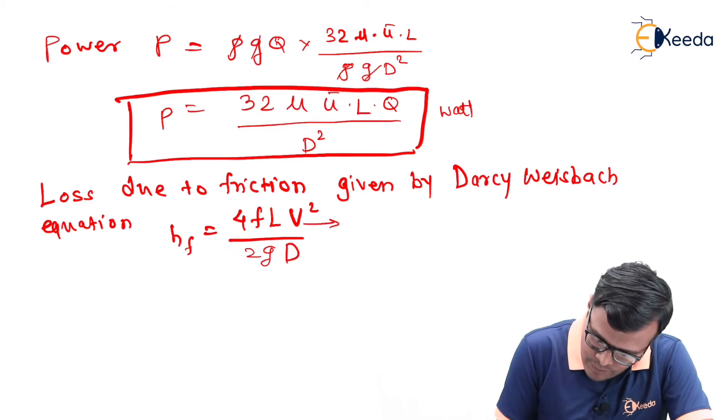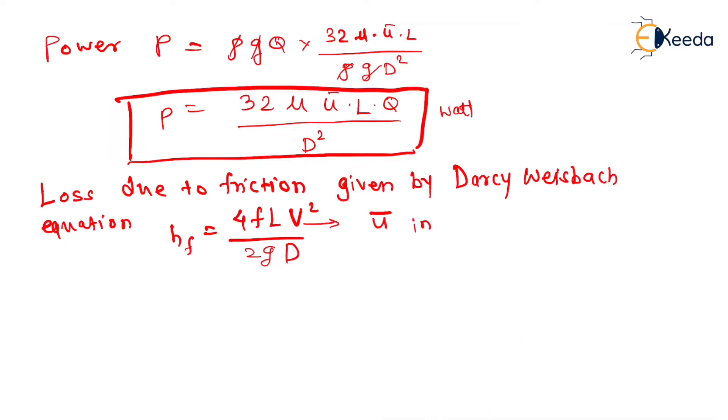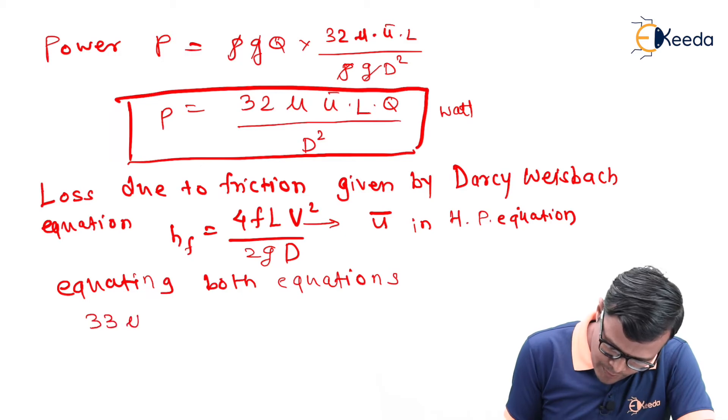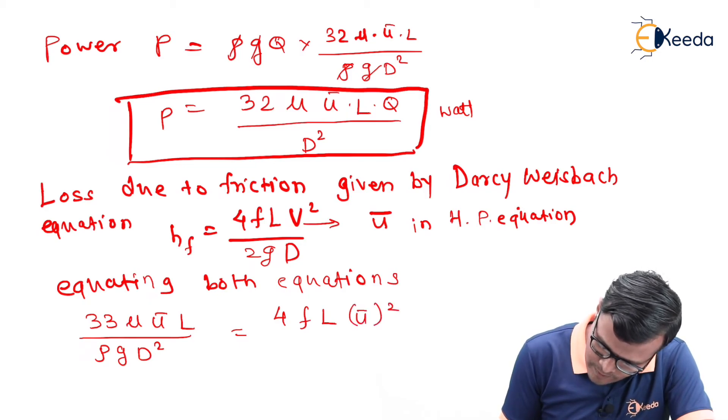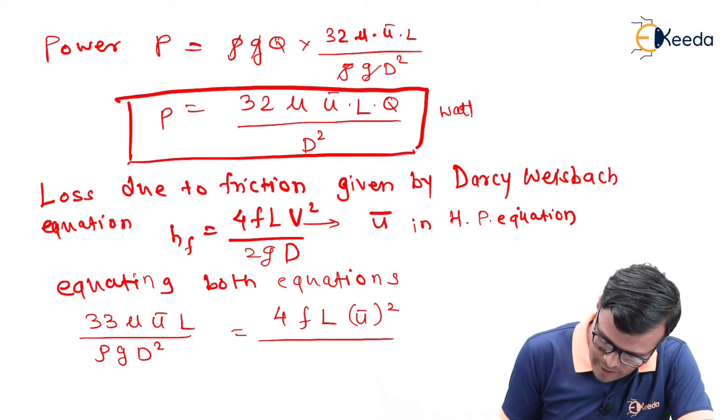We will convert both the equations, equating both equations. One side will be 32 mu u bar L upon rho g d square, that is equal to 4 f L this u bar square upon 2 into g into d. Here we can observe that this one d can get cancelled out, this length gets cancelled out, this term g is also cancelled out.